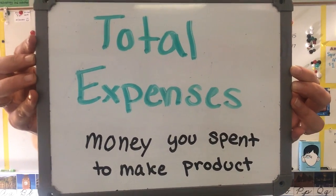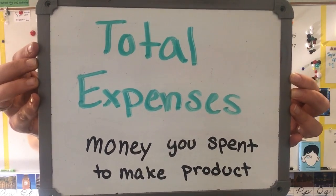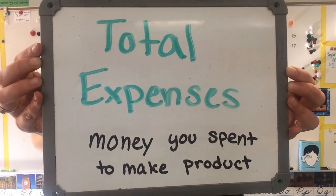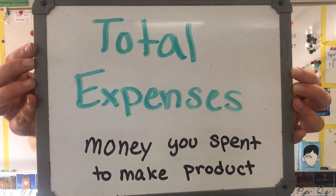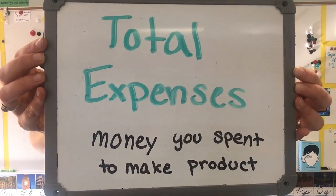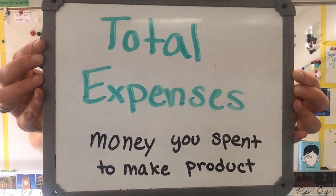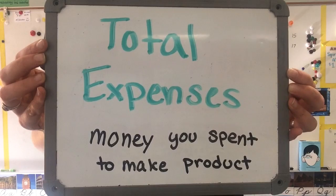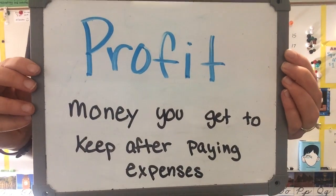Our next vocabulary word is total expenses. We talked about fixed and variable expenses on Monday, but when we're talking about total expenses and profit, we're talking about the money you spent to make your product. Back to our bake sale — all the money you spent to make the cookies is your total expenses. For the lawn mowing business, the gas and the lawn mower you had to buy are part of your total expenses.